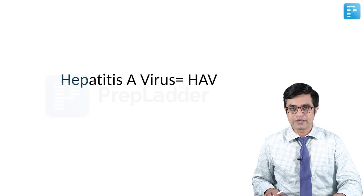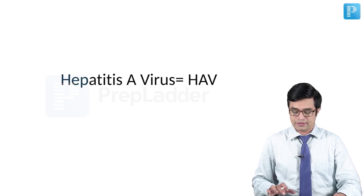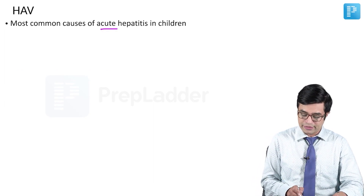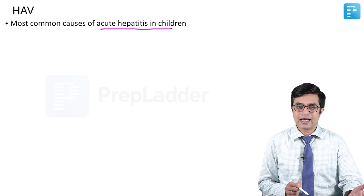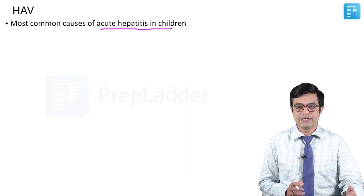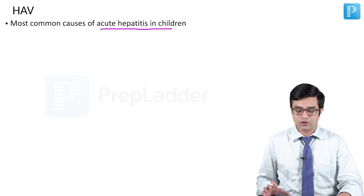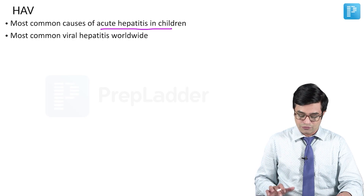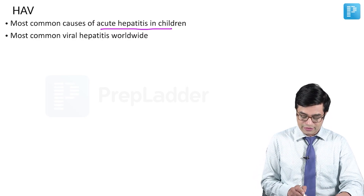Let us now discuss individual viruses, and first we will be talking about Hepatitis A virus. Hepatitis A virus is the most common cause of acute hepatitis in children, both in the United States and in India. Nelson, OPGai, and IAP textbook all mention this. If you include adults also, this is the most common viral hepatitis worldwide.